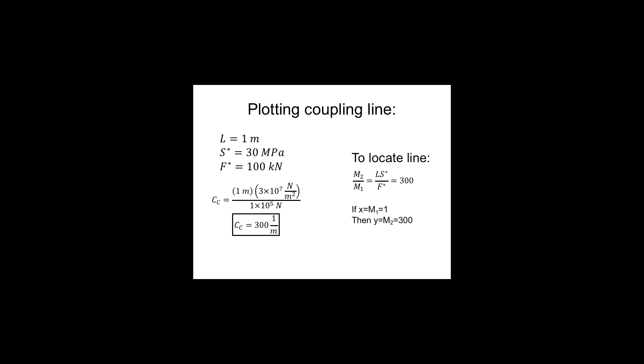And so I know that M2, the ratio of M2 divided by M1, that's just my coupling constant, which is the length times the stiffness divided by force, and we found that's 300. So the easiest way to then determine the location of where this is going to be is to figure out the x and y coordinates of a single point on that coupling line. So for instance, we know that if x, which is M1, if that's equal to 1, that's the denominator here, then we know that y, our numerator, needs to be 300 so that this ratio stays the same. So our points are going to be x equals 1 and y equals 300.